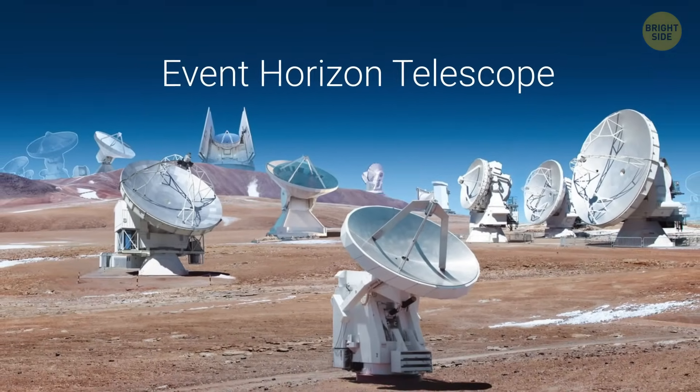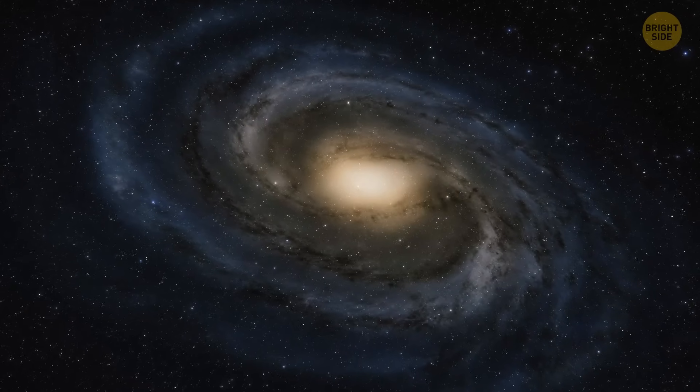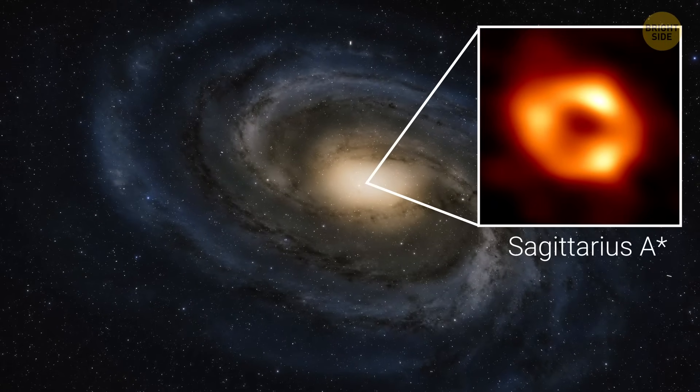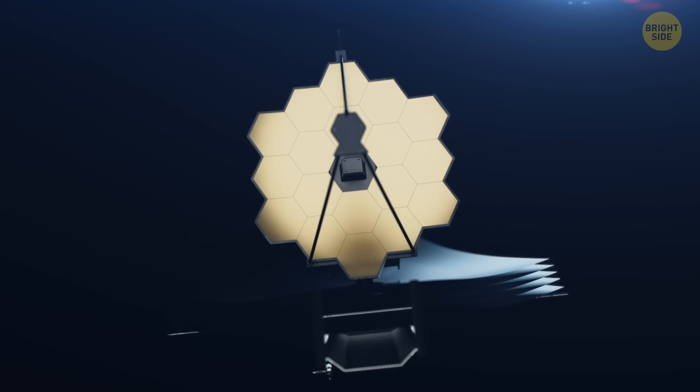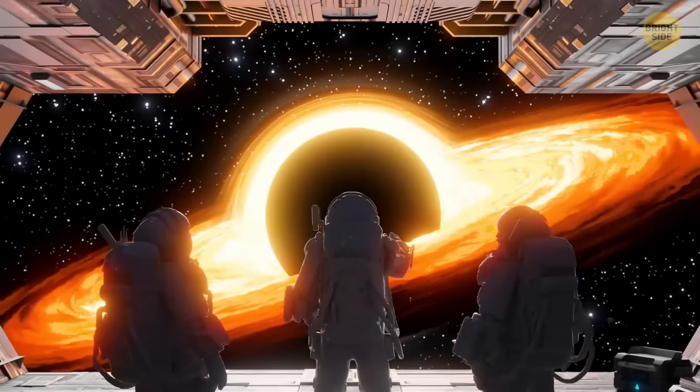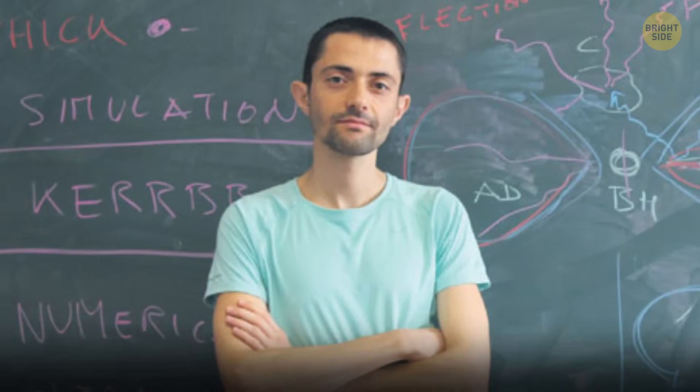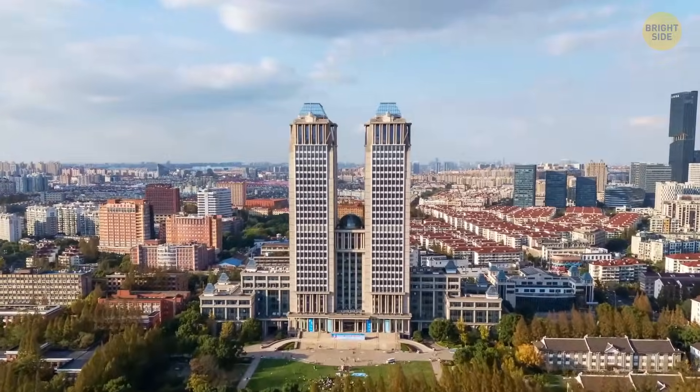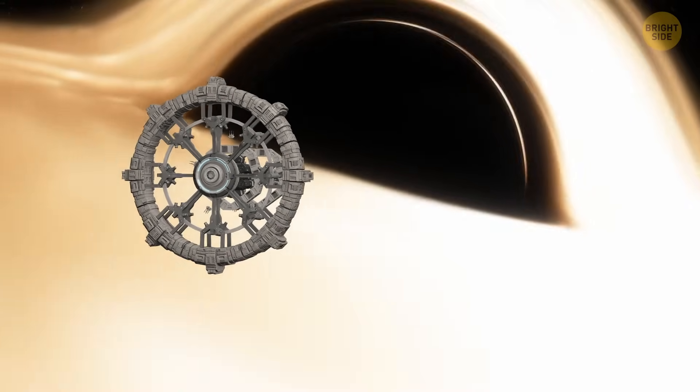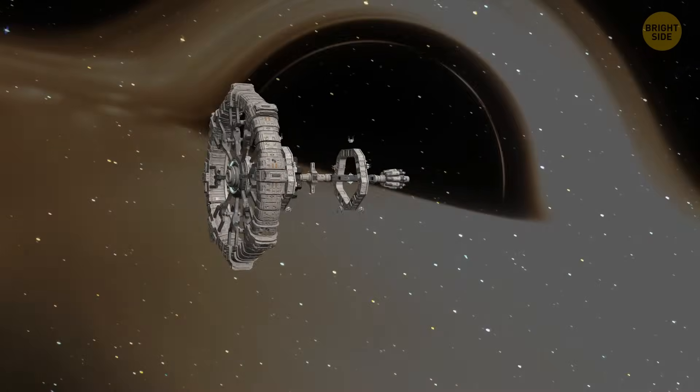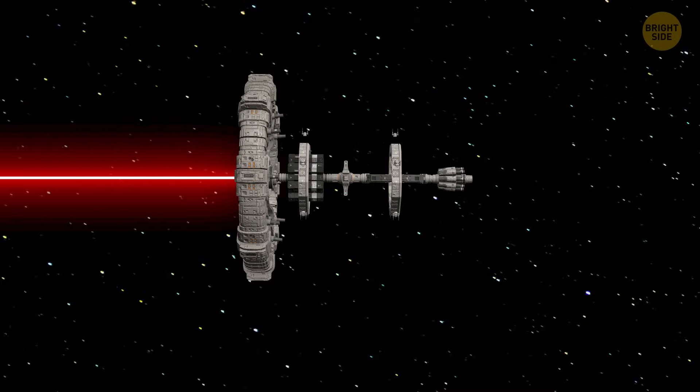Three years later, EHT did it again. This time, it snapped a pic of our own Milky Way's black hole, Sagittarius A-star, or Sag A-star, if you're feeling lazy. Seeing black holes is cool. Visiting them? Probably not so much. Yet. Enter astrophysicist Cosimo Bambi from Fudan University in China. The guy's got dreams. He imagines humans visiting a black hole within the next hundred years. But there's a catch. We'd need a spacecraft so light it could be zapped across space by a laser beam.